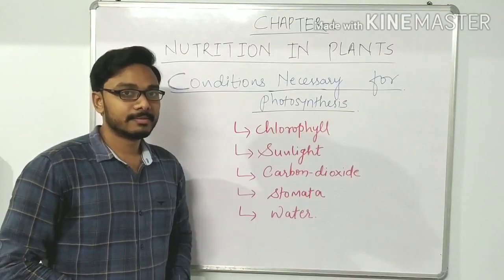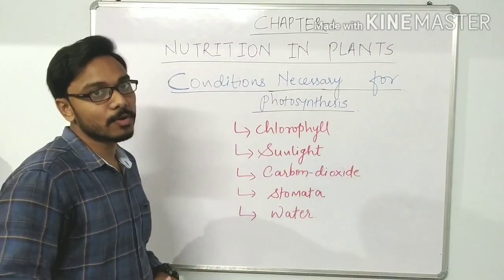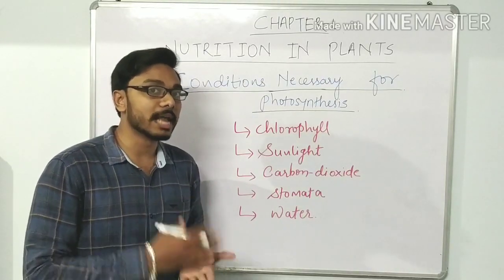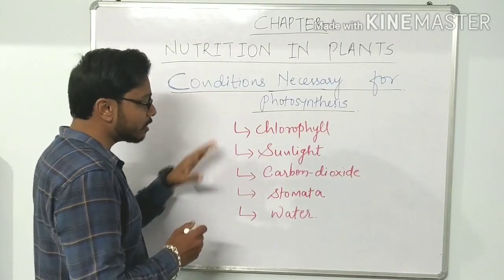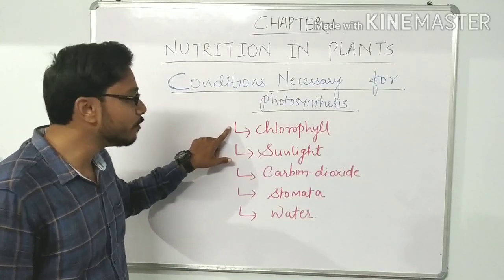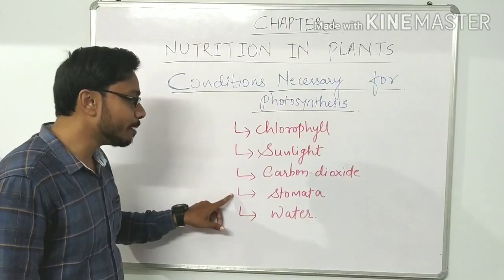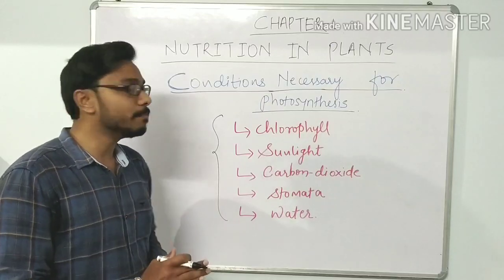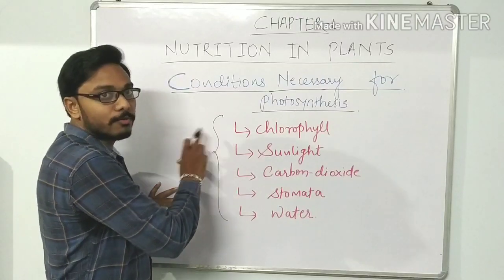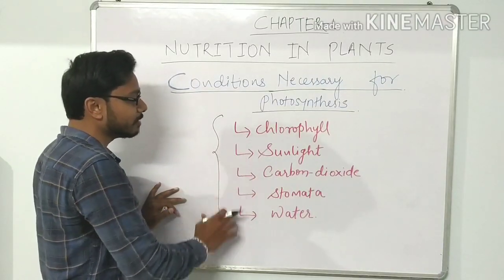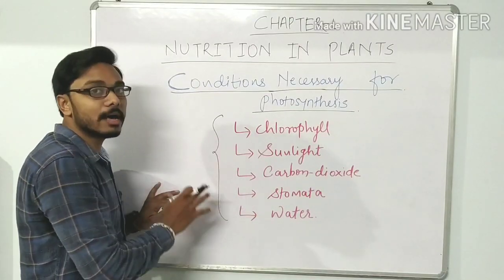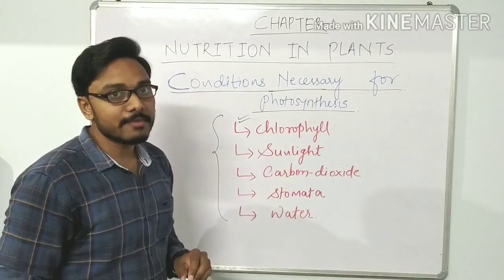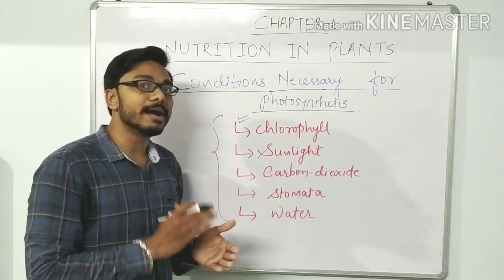Now we will talk about the conditions necessary for photosynthesis. There are five important conditions: first is chlorophyll, second is sunlight, third is carbon dioxide, fourth is stomata, and fifth is water. These five are the most important factors for photosynthesis to occur. If any one of these conditions is missing, photosynthesis will not occur. Now we will see each one in detail. Chlorophyll is a green pigment which provides green color to the plant and its green leaves.